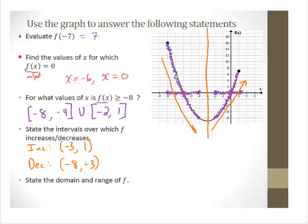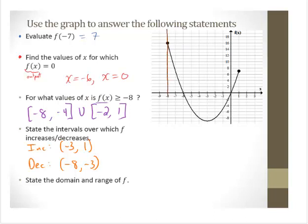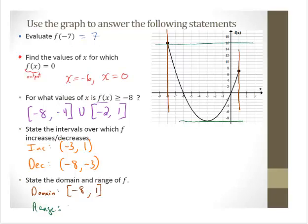State the domain and range of the function. The graph doesn't continue all the way to the left or all the way to the right — the domain has specific boundaries. It's connected everywhere in between, so the domain is [−8, 1] — we include the endpoints. For the range, there is a minimum at −9 and a maximum at 16 with everything in between included, so the range is [−9, 16].